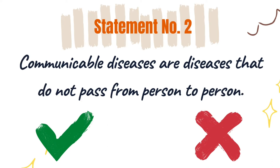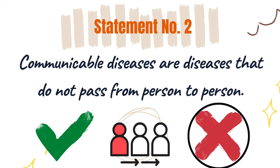Statement number two: communicable diseases are diseases that do not pass from person to person. The correct answer is a cross mark. That is not correct because communicable diseases are diseases that pass from person to person, or from an animal to a person, or from animal to animal.